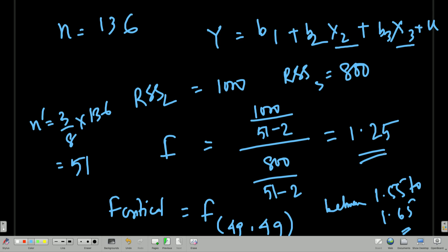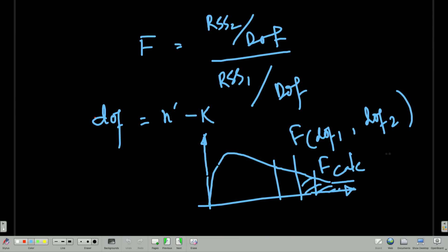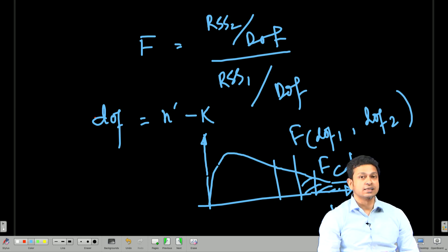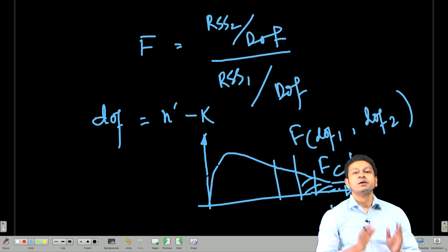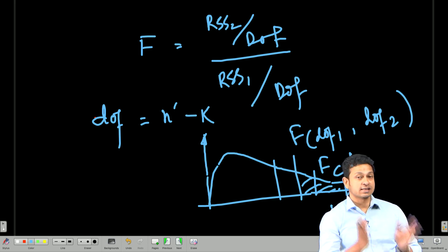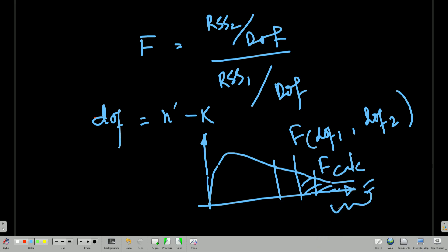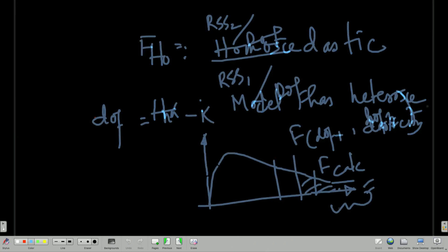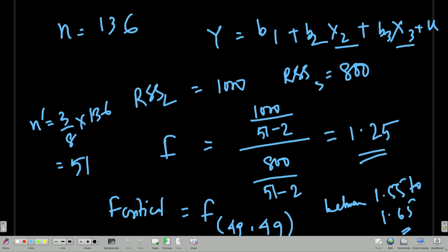Since the calculated F of 1.25 falls to the left of the F-critical, we do not reject the null hypothesis. This means we cannot conclude that heteroscedasticity is present — the model appears to be homoscedastic. Heteroscedasticity refers to disproportionate variance and is the alternative hypothesis; homoscedasticity (equal variances) is the null. This is how we conduct the Goldfeld-Quandt test.